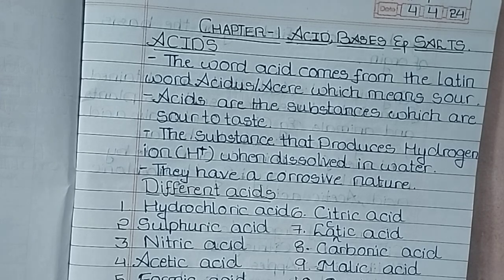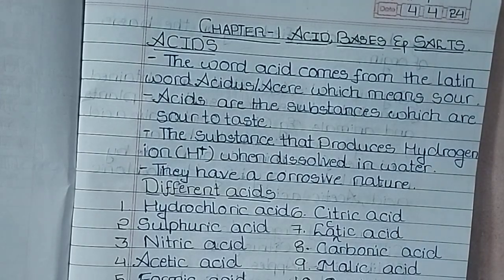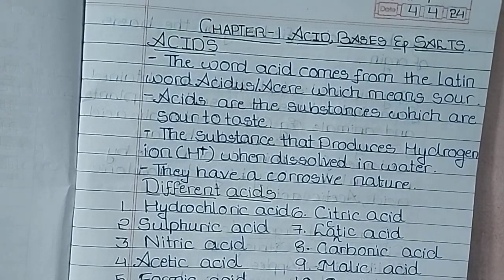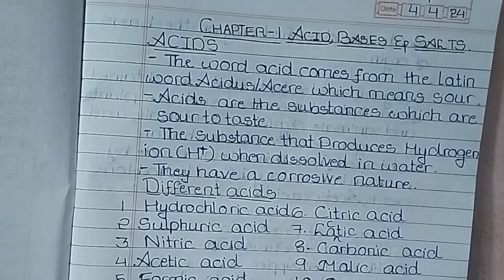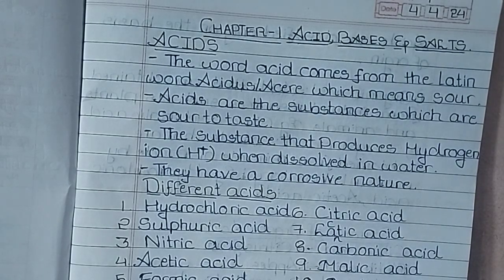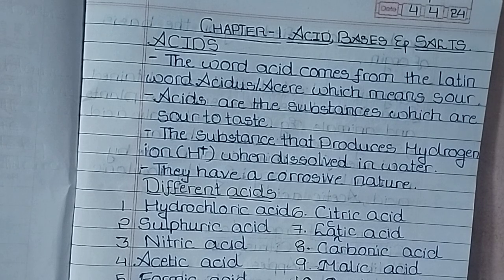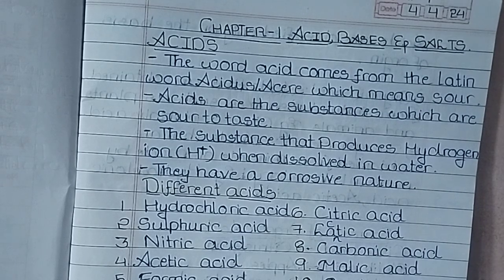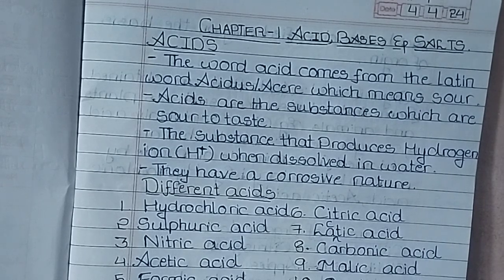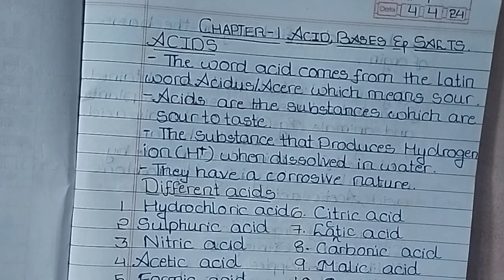Acids are corrosive in nature. When you add acids such as H2SO4 or HCl, they are highly corrosive and can dissolve metals. Gold can be dissolved by a substance called aqua regia, which we will cover in a later section. There are different types of acids.